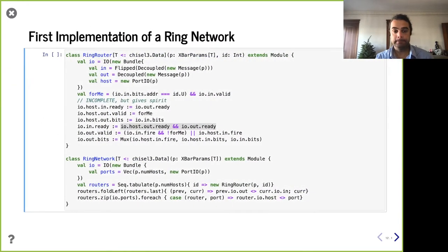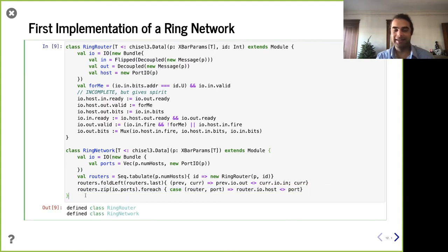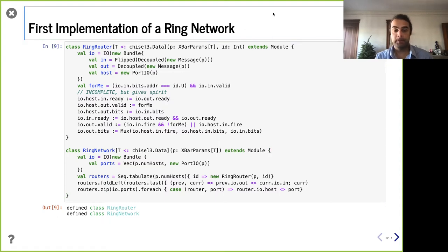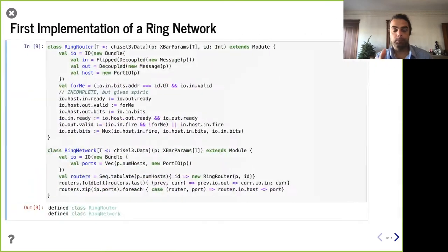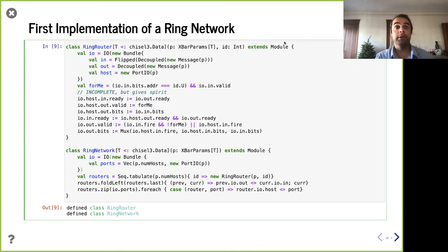We did the ring — the key thing was the router concept: if this message is for me, pull it off and send to host; if not, send out the output port since that's the only choice. We used functional programming to wire up the topology quickly — made N routers, connected them in a ring, and connected them to the output ports. Now we built this ring and used some crossbar stuff. The question is: what if we start building a library now with both a crossbar and a ring network? People could start going in and having a network library.